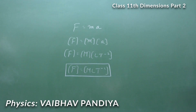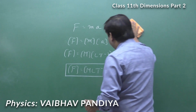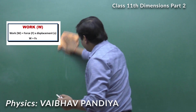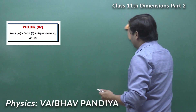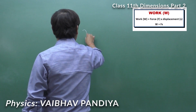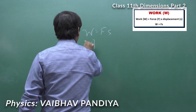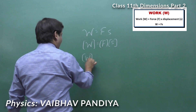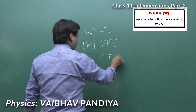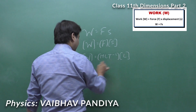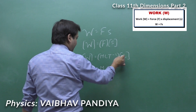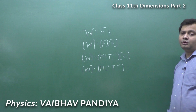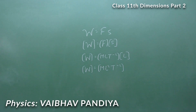Work equals force into displacement. The dimensional formula of force is MLT⁻², and displacement is L. So the dimensional formula for work is ML²T⁻².